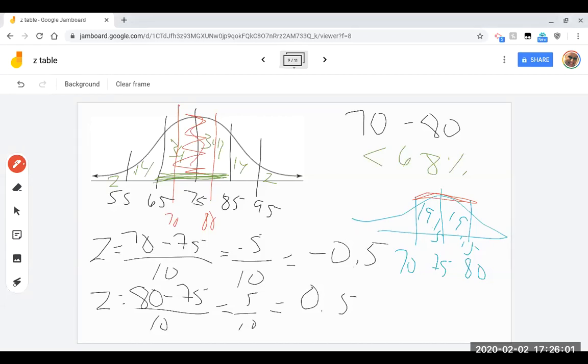So now we know that the total answer is 38.30%. And that's the percent of scores or the percent of people who drive between 70 and 80 miles per hour.